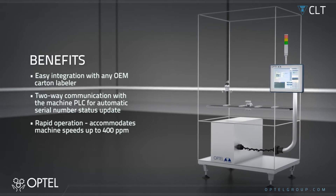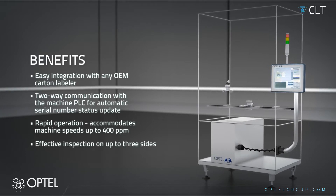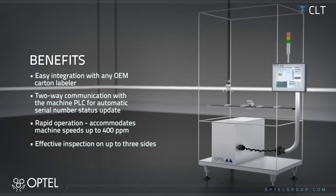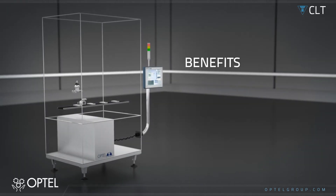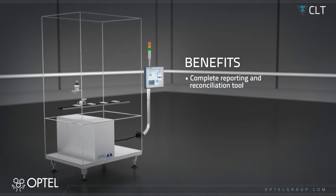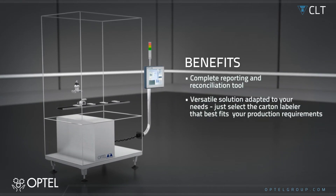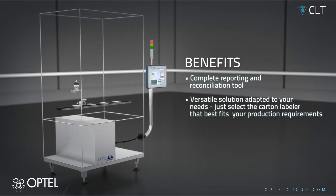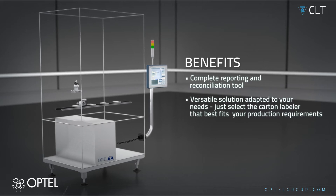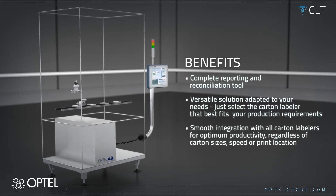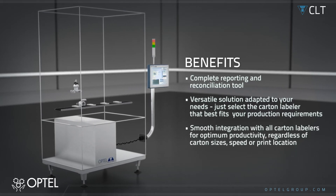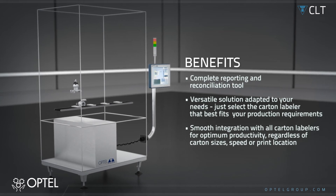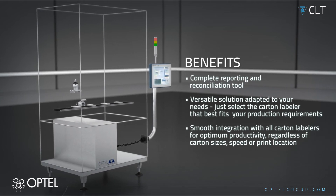Benefits include: easy integration with any OEM carton labeler, two-way communication with the machine PLC for automatic serial number status update, rapid operation accommodating machine speeds up to 400 ppm, effective inspection on up to three sides, and complete reporting and reconciliation tools. A versatile solution adapted to your needs — just select the carton labeler that best fits your production requirements for smooth integration and optimum productivity, regardless of carton sizes, speed, or print location.